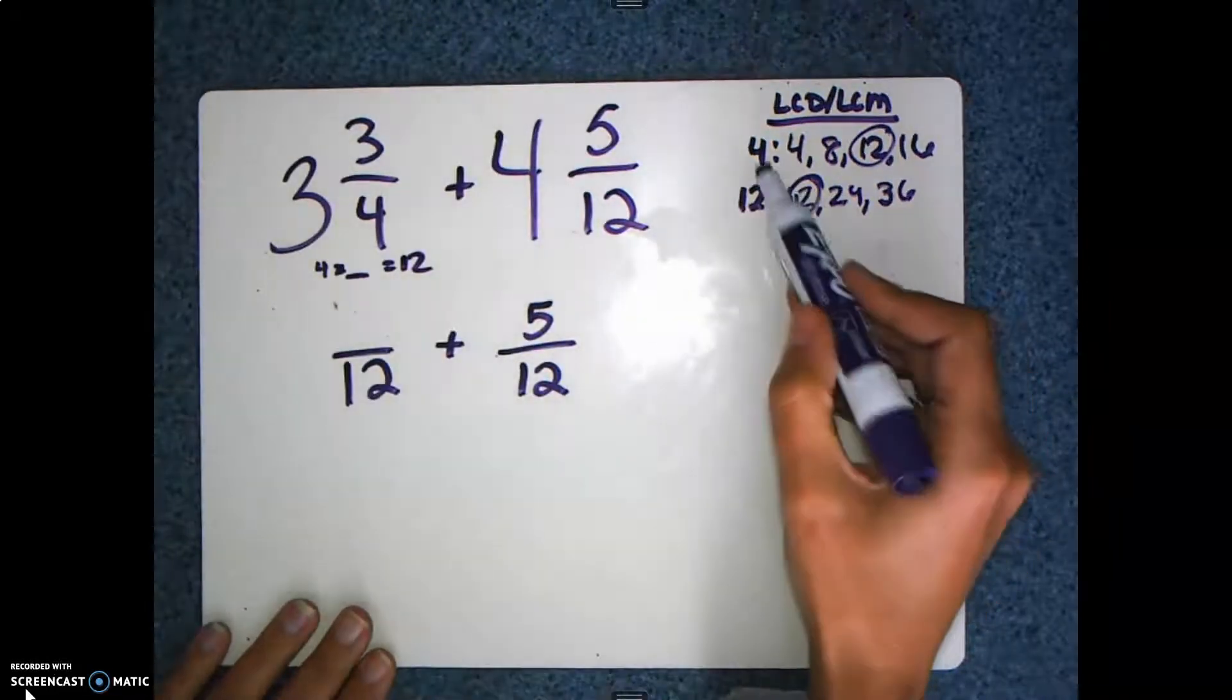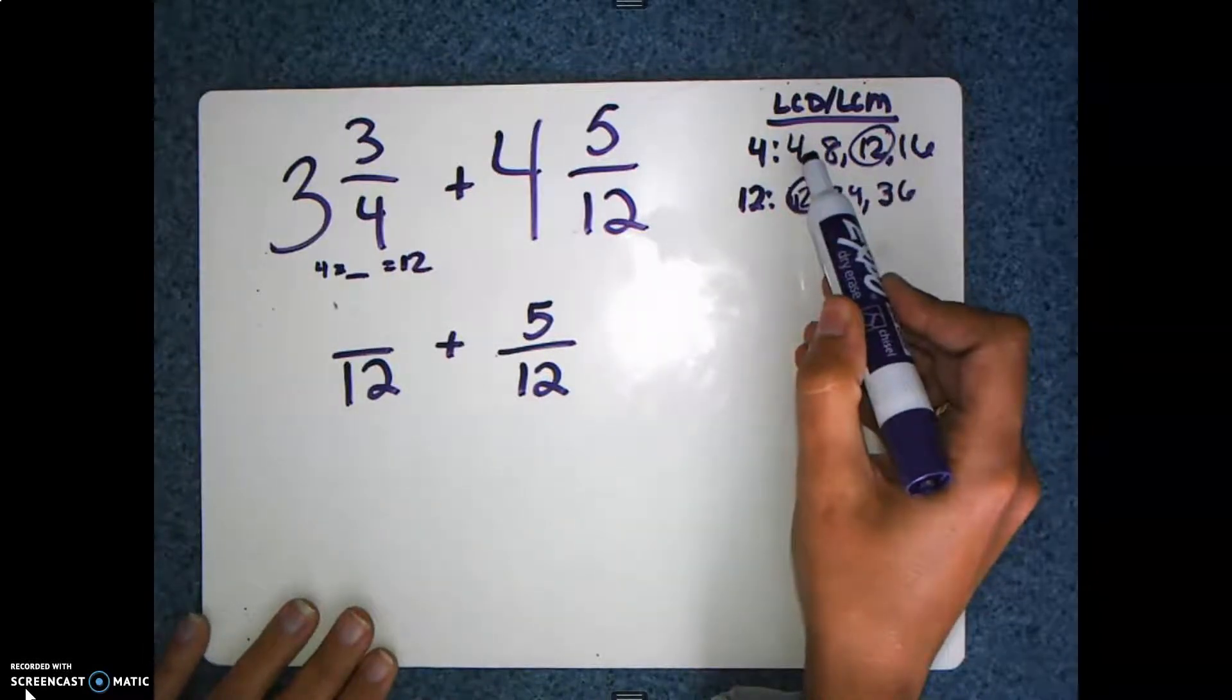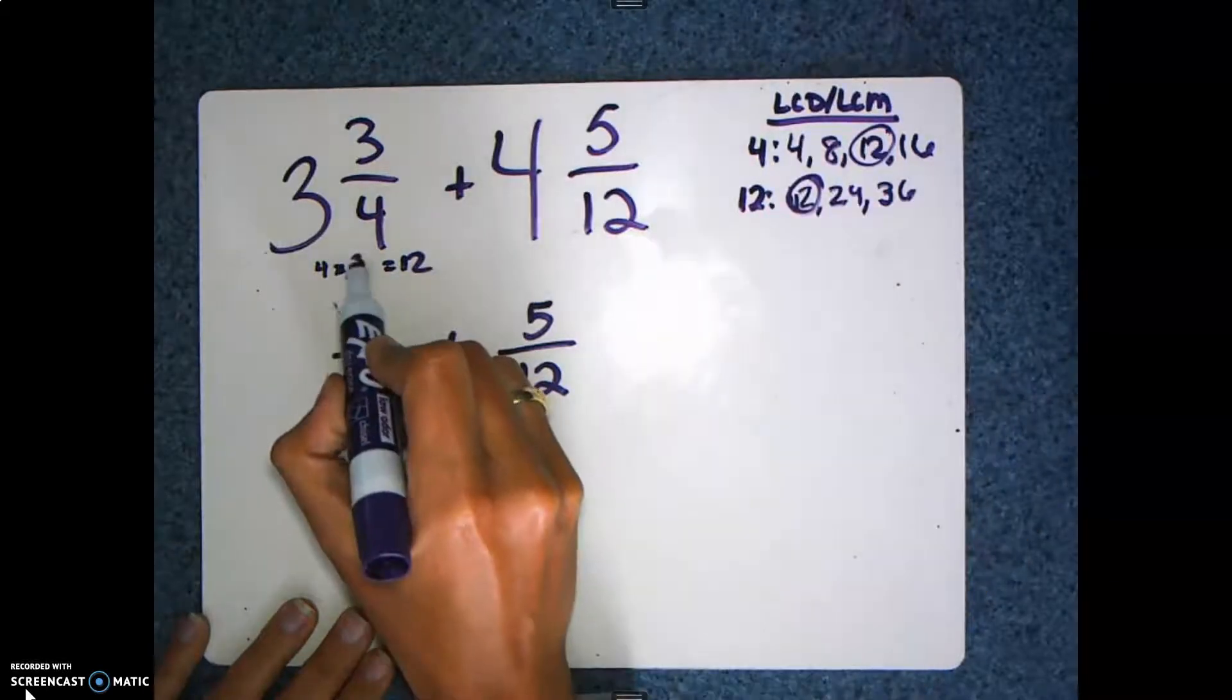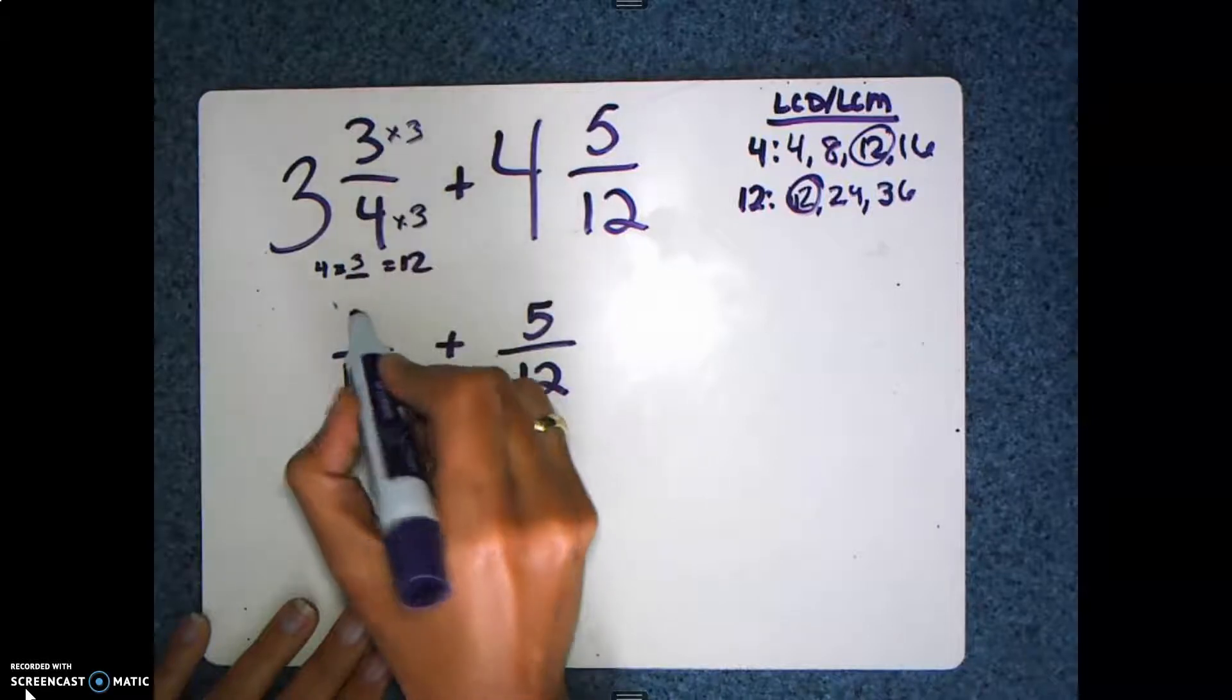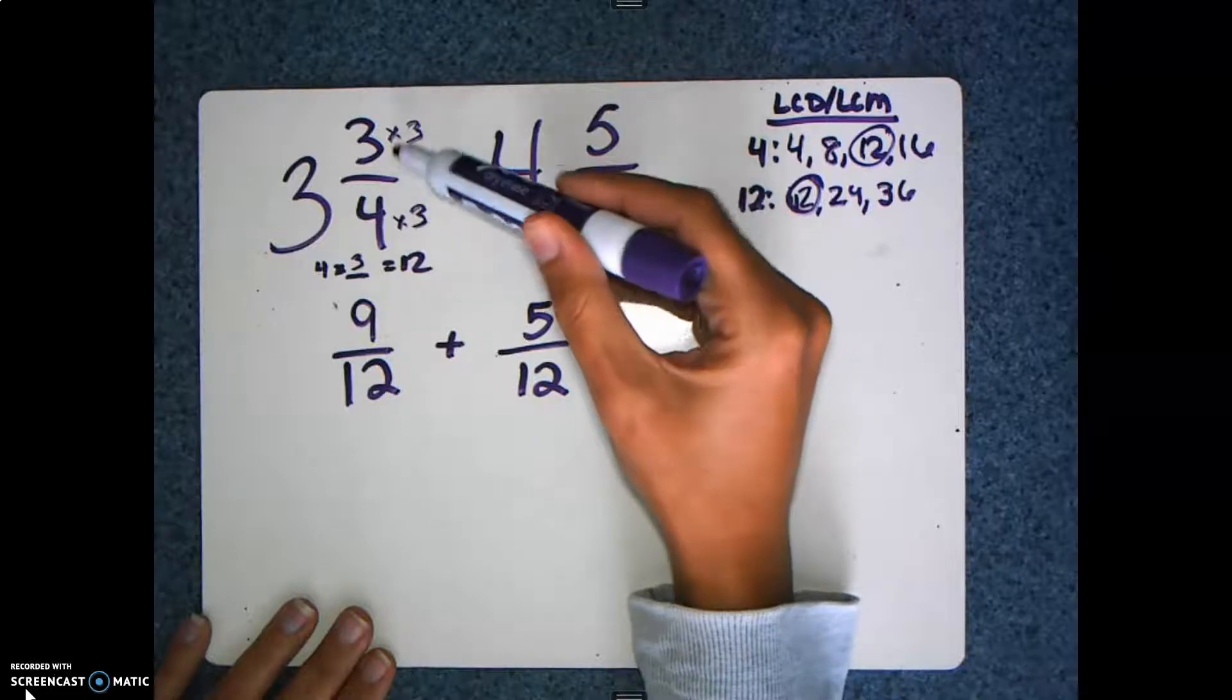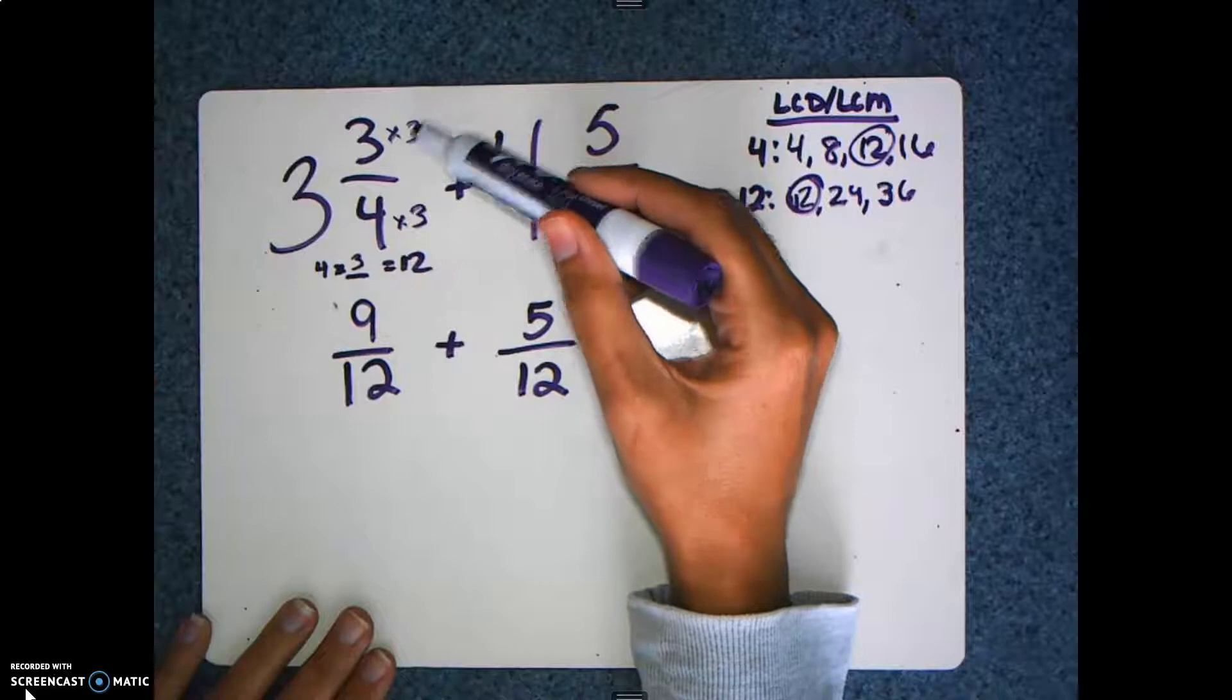You can come over here to where you skip counted it if you wrote it out and count how many times you skip counted to get to 12. One, two, three. So 4 times 3 gives me 12, and 3 times 3 equals 9. Remember that whatever you multiply the denominator by, you have to multiply the numerator by. You can't leave this guy hanging out by himself.